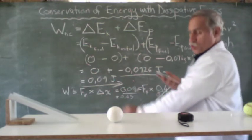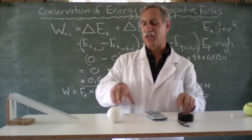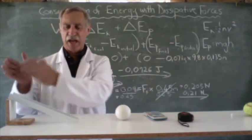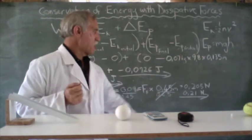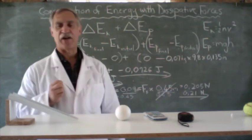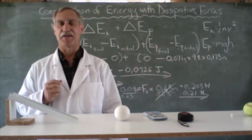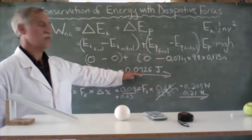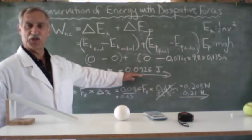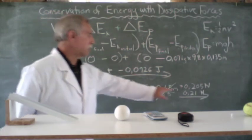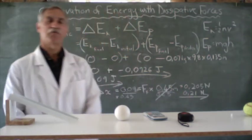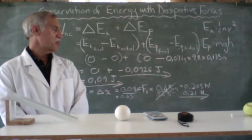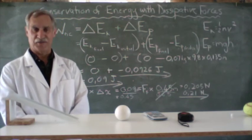So, 0.21 newtons is our non-conservative force acting over that distance of 0.45 meters. And, there we've worked out both the energy lost due to non-conservative forces, and we've calculated the frictional force as being equal to 0.21 newtons. So, thank you very much.